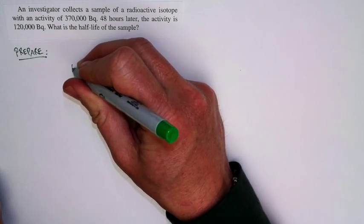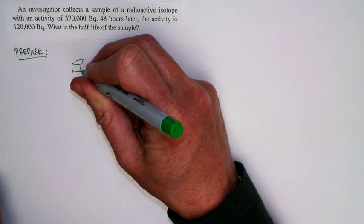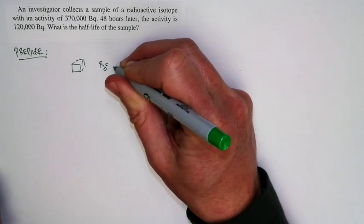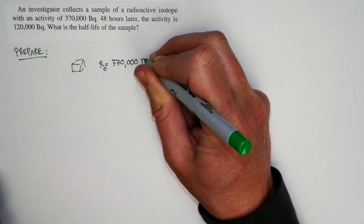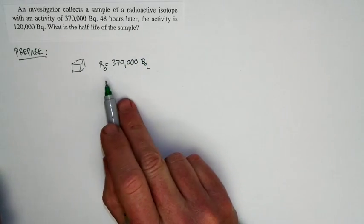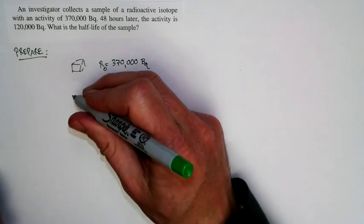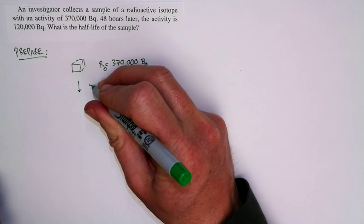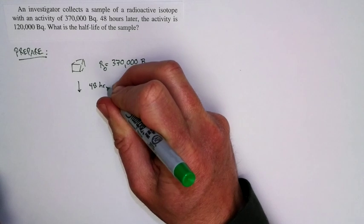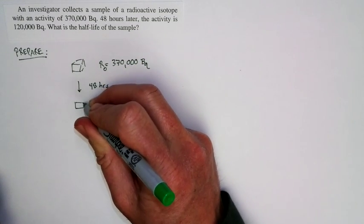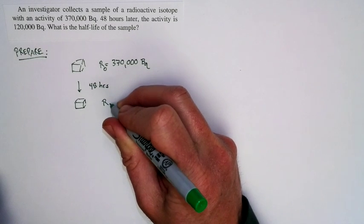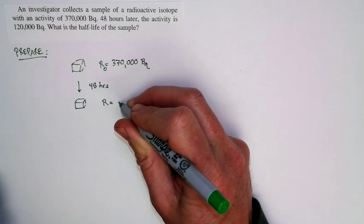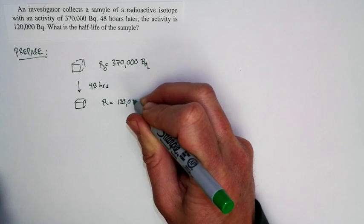Okay, so we have some sort of a sample, and it starts with an activity of 370,000 Becquerels. Now we're going to take that and let that be R₀. That's our initial activity. 48 hours pass. So after 48 hours, we end up with the same sample, but now has an activity of 120,000 Becquerels.